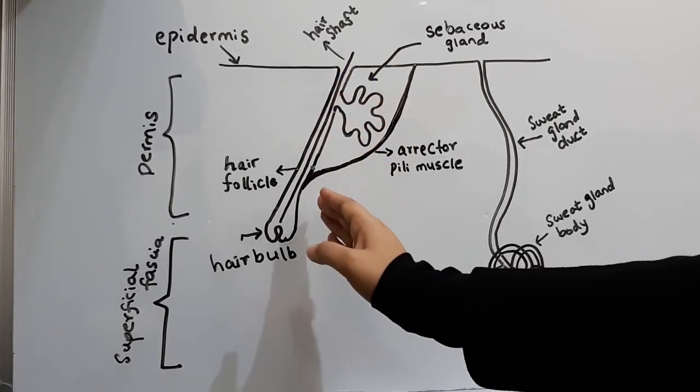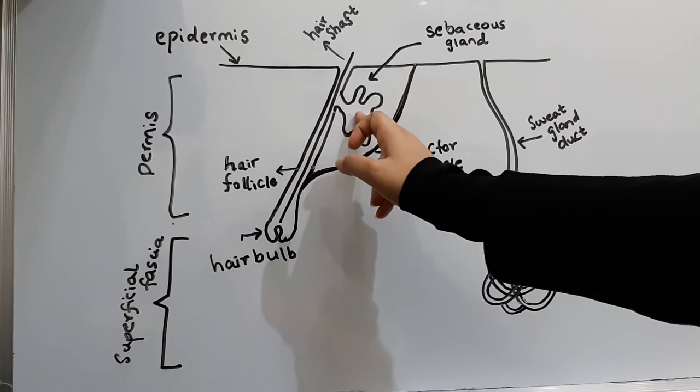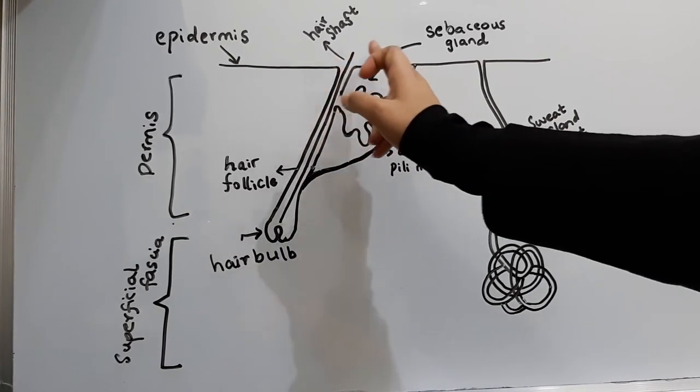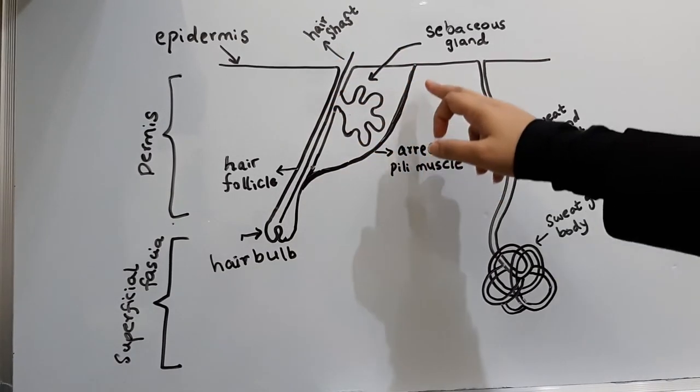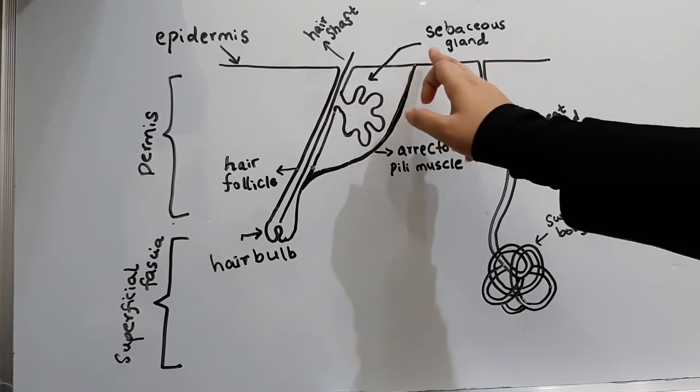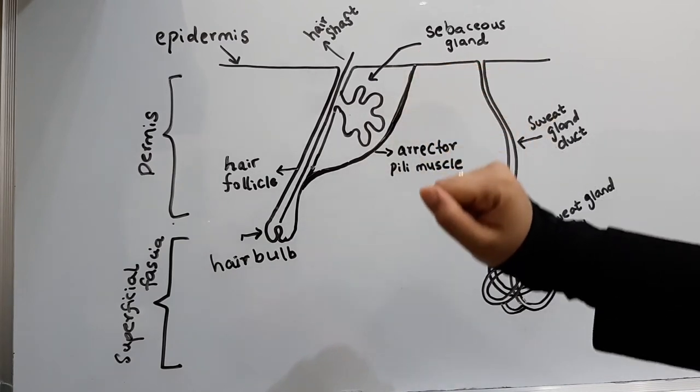As a result of this movement, the sebaceous gland which is attached to the hair follicle excretes secretion onto the skin surface, and the pull causes the dimpling of the skin surface, which is called gooseflesh.